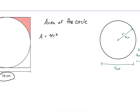We have the radius, and now we can plug this into our area equation to find the area of the circle. So A equals pi times 8 squared, and this comes out to 201.06 centimeters squared.